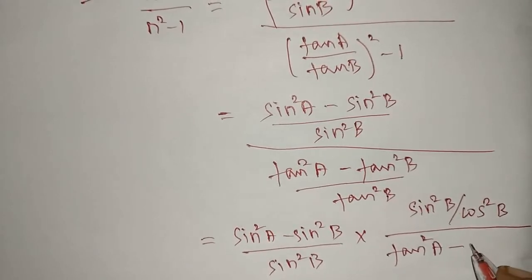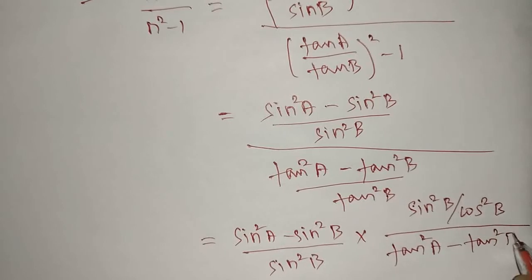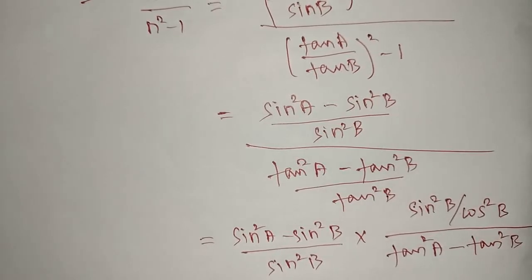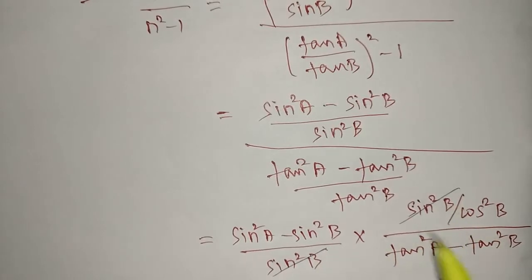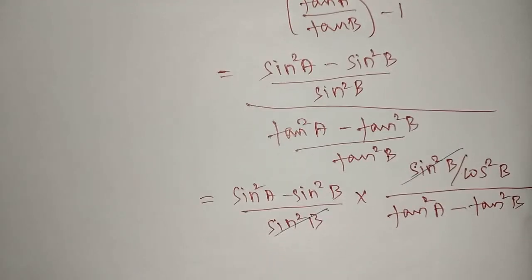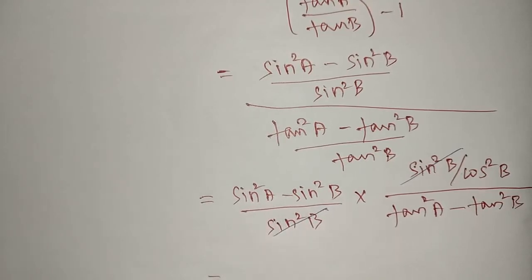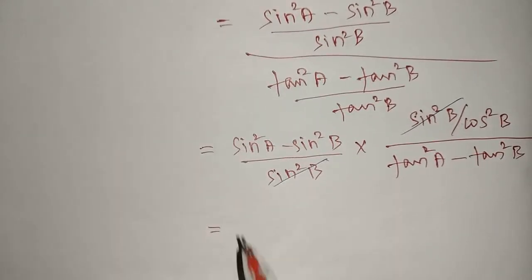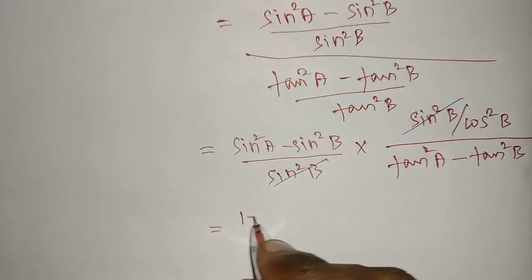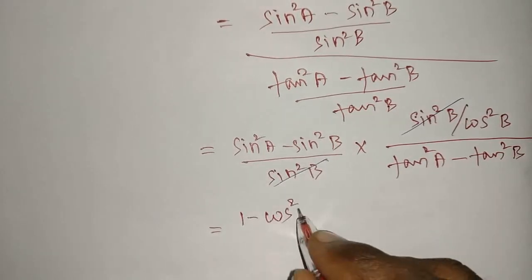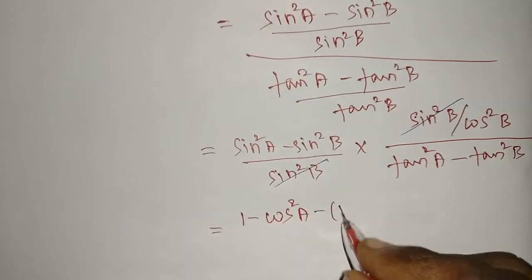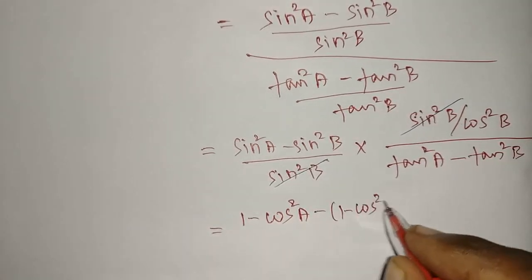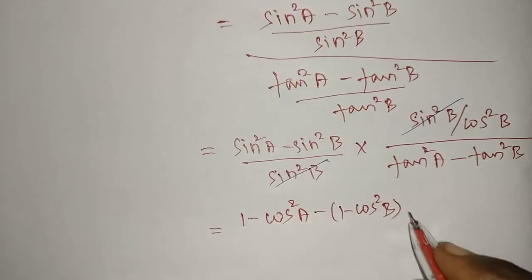The sin²B in numerator and denominator cancel. The remaining expression is (sin²A minus sin²B) divided by (tan²A minus tan²B), now with 1/cos²B. Since we need everything in terms of cos, I write sin²A as (1 - cos²A) and sin²B as (1 - cos²B).